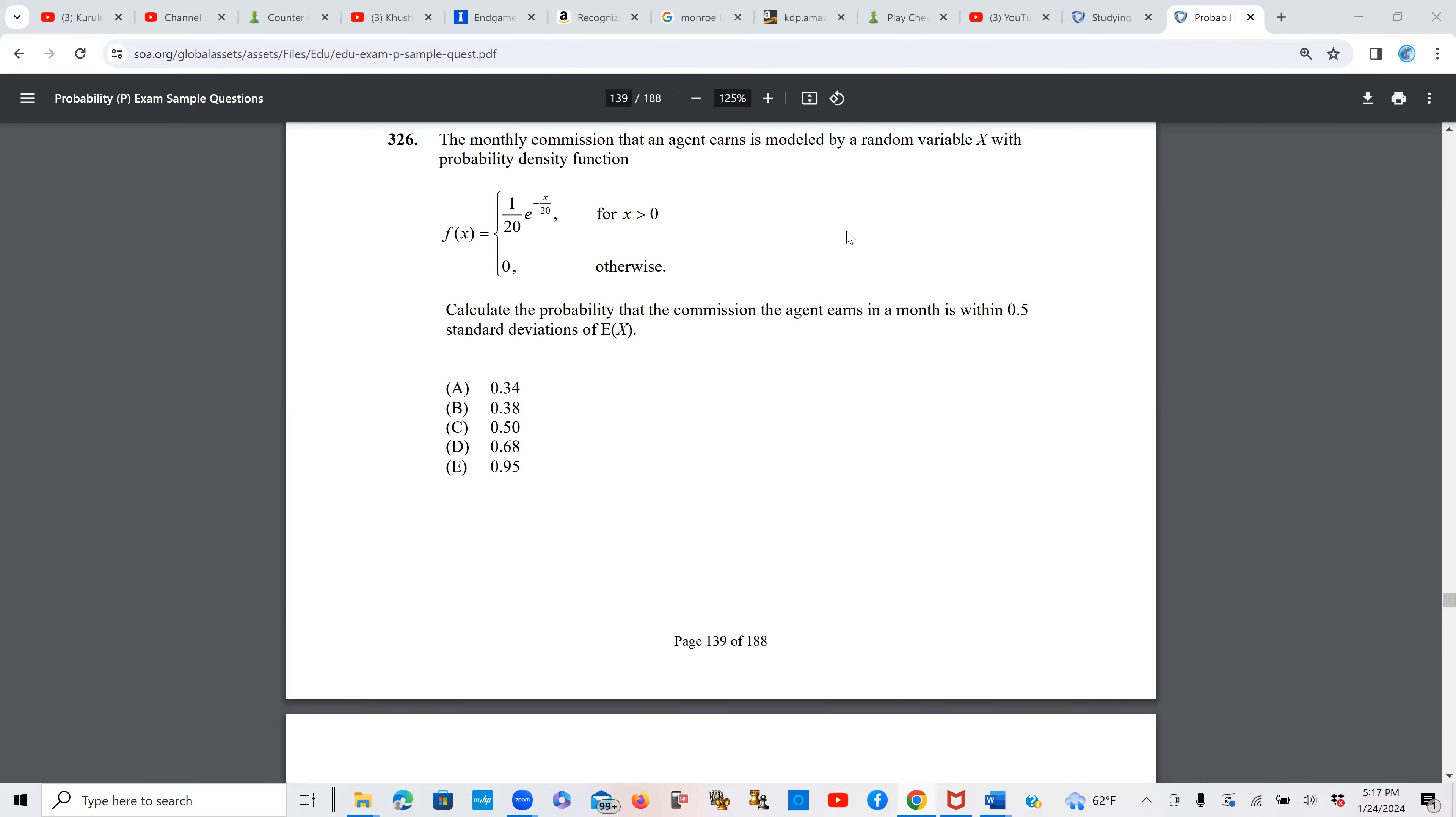Monthly commission that an agent earns is random variable x with the PDF given. Now this is an exponential PDF with mean 20 because we have 1 over m e power negative x over m for positive x. So this is exponential with mean m which in this case is 20.